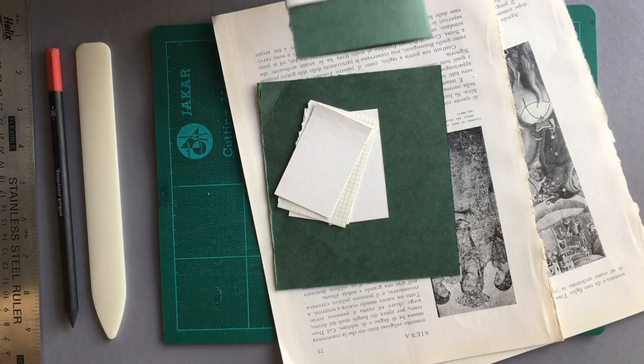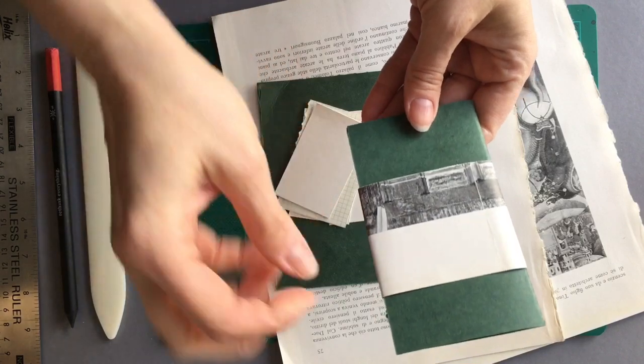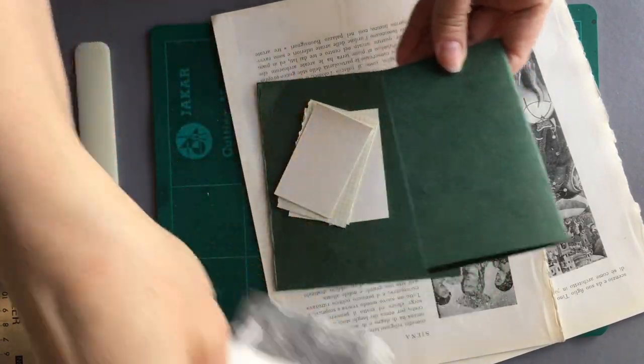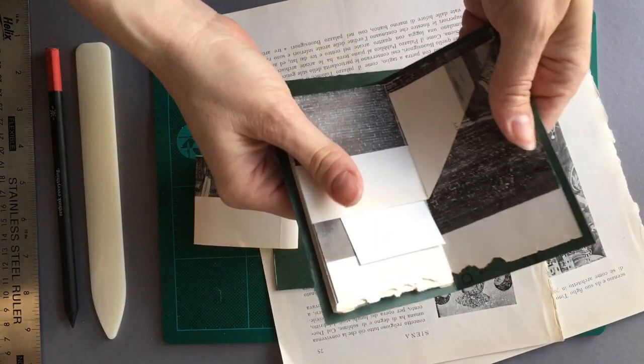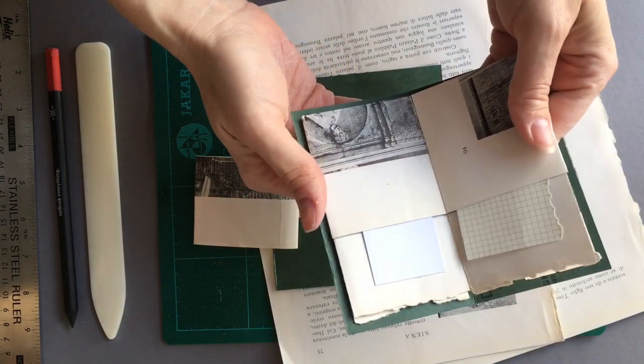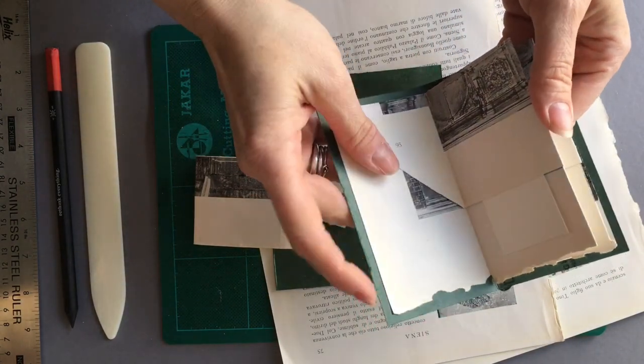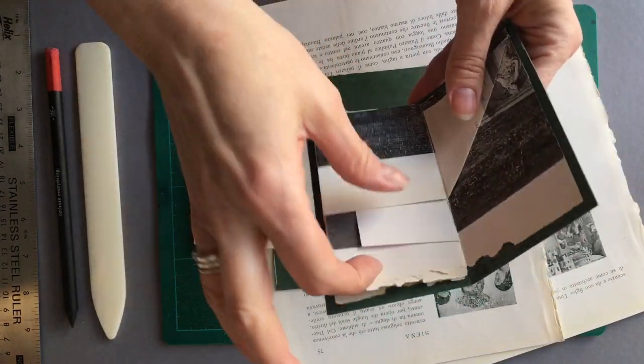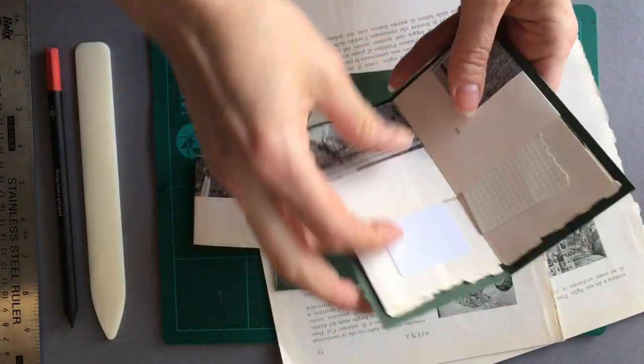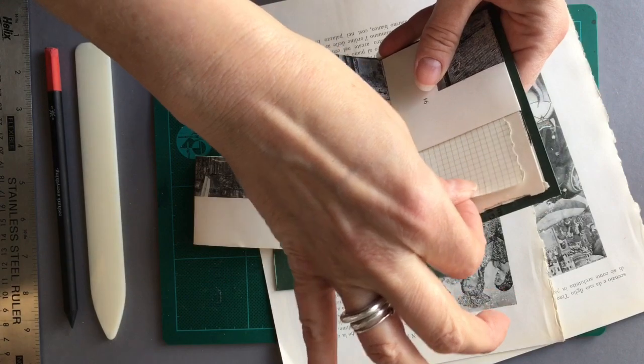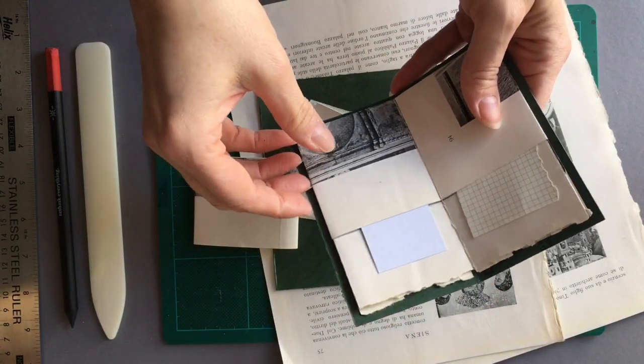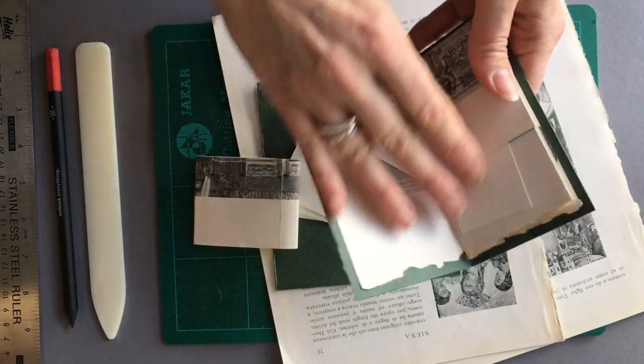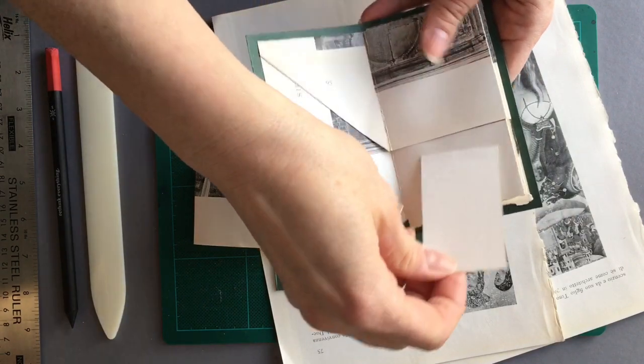For this second little book, this is also a concertina or accordion fold, but this time we've got pockets. You can use one kind of paper to make the body of the book and then you can tuck things in.